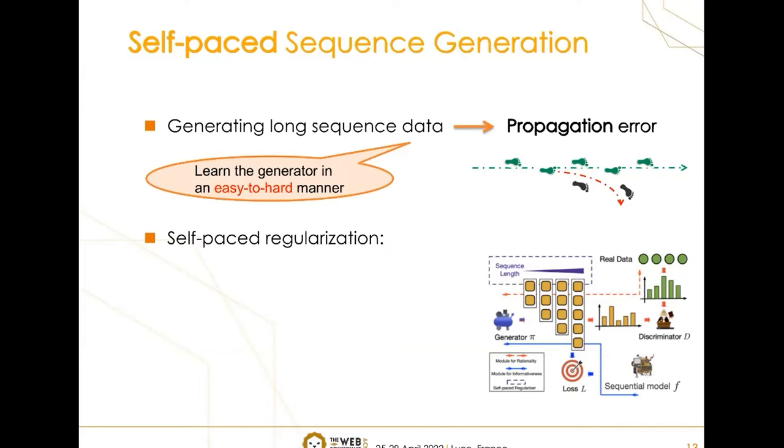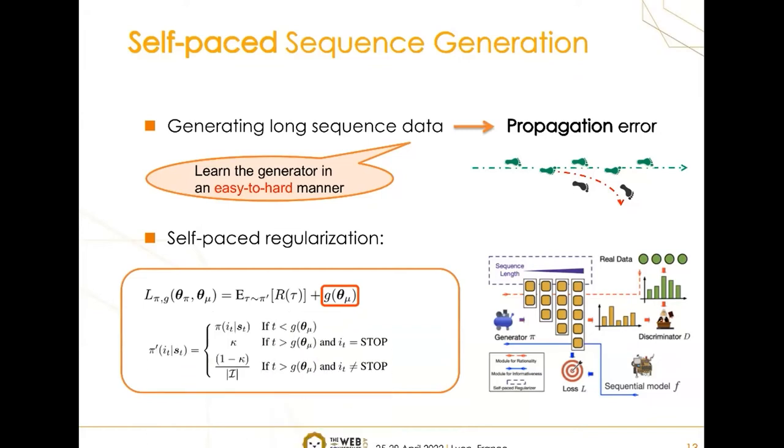Existing works in self-paced learning mainly focus on classification or regression under supervised learning framework. However, we want to study self-paced learning for generative tasks in the context of reinforcement learning. To fill this gap, we propose a novel objective where G is a regularizer, and it will be gradually increased in the learning process via maximizing the objective. The key idea of self-paced regularization is that the regularizer G connects with the step index T so as to control the sequence length. With the increase of G, the generated sequence is gradually allowed to become longer.